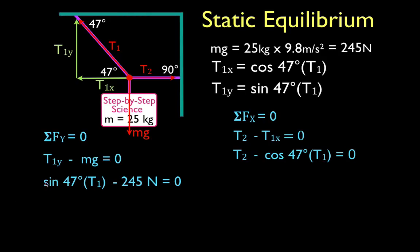Over here, in the y direction, we have just one variable, T1. We know the sine of 47. We know that 245 is 245. So, we have one variable and one equation, and therefore, we can solve for T1 pretty easily.